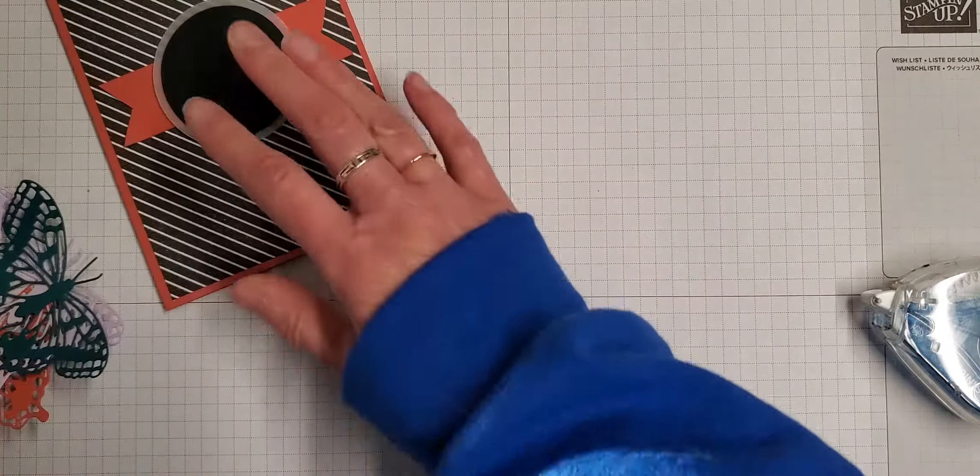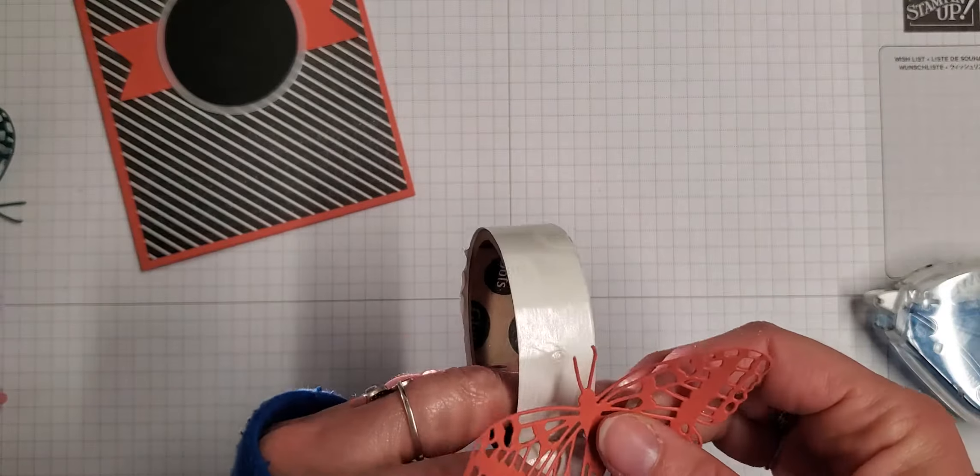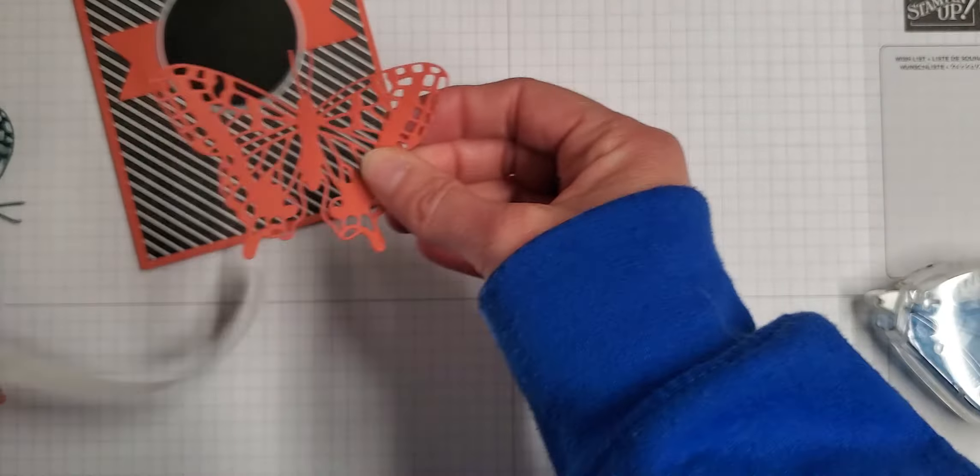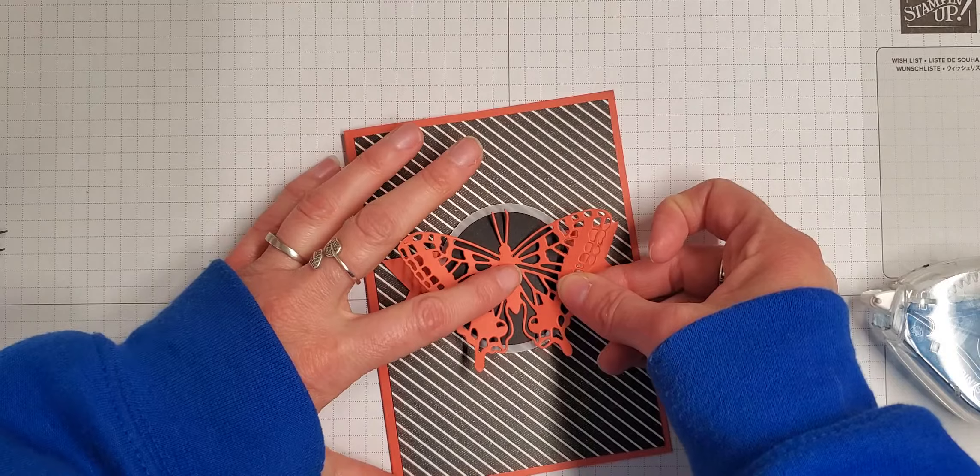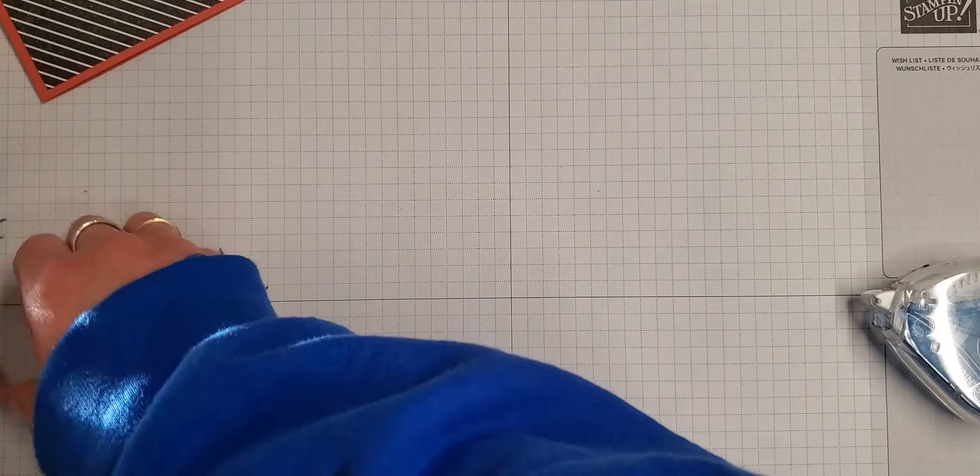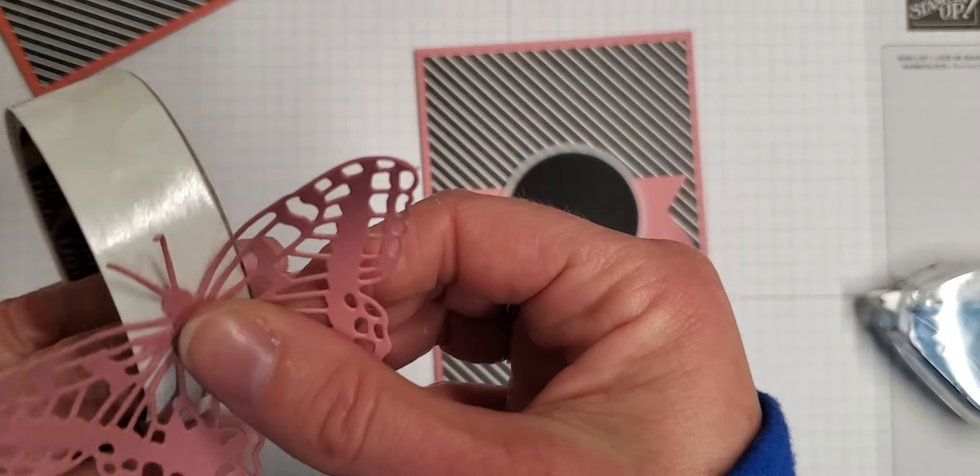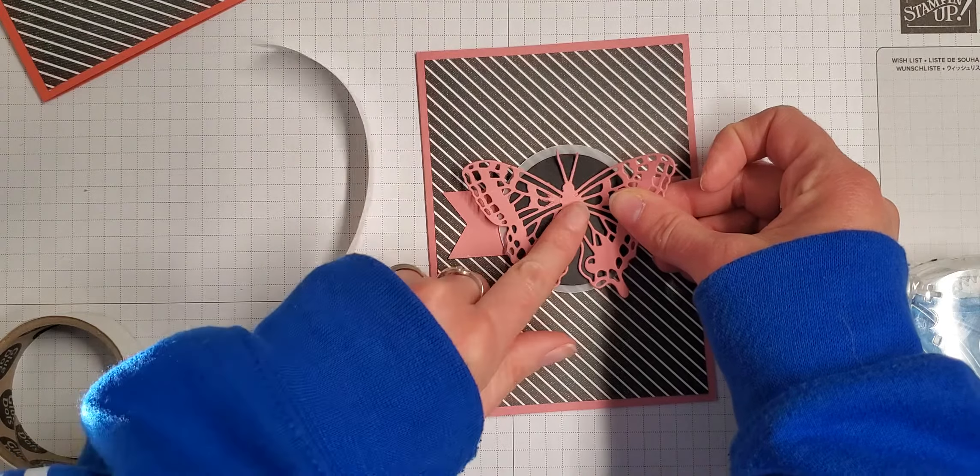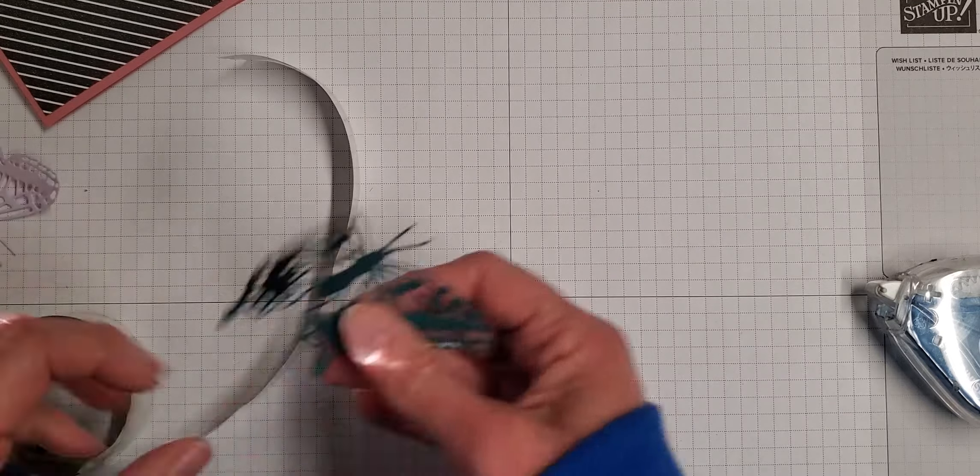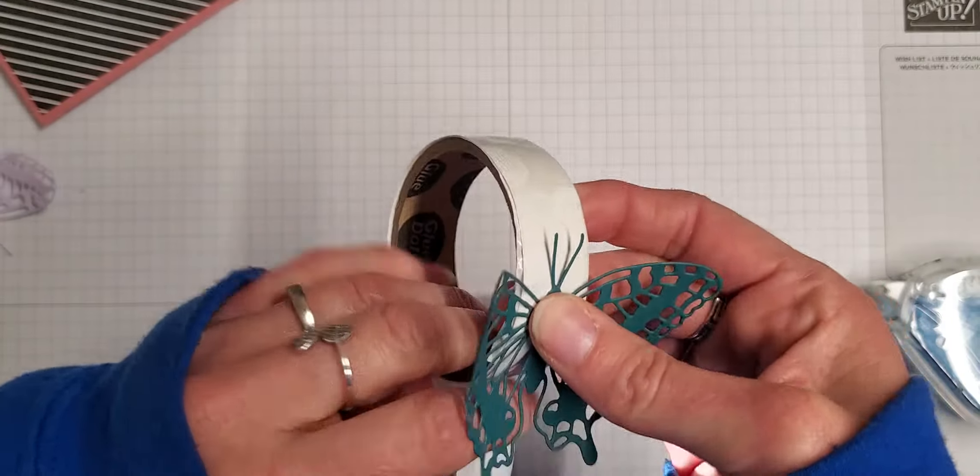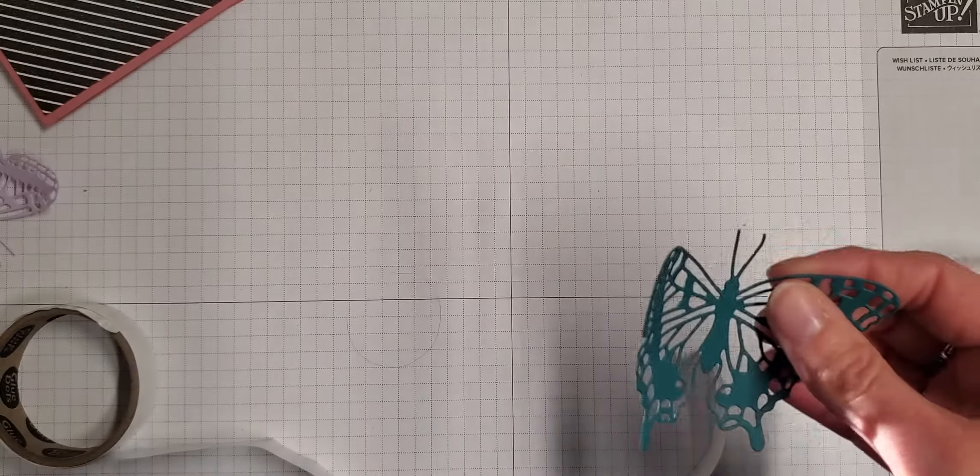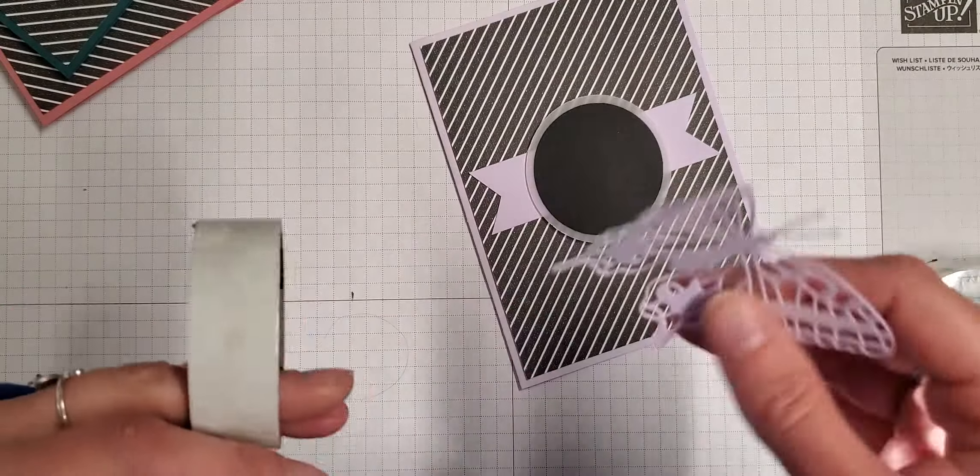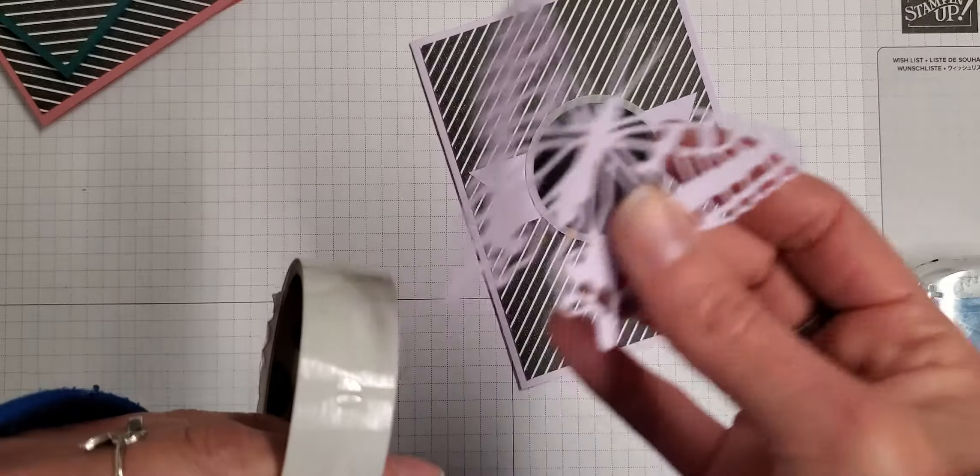Then we'll do the Peacock, then Rococo Rose, and then the final one, the Terracotta Tile. Alright, and then I'm going to grab some mini glue dots and we're going to attach our butterflies to the card. I'm going to do this and attach that in the center. Okay there's one, then we'll do the Rococo Rose.